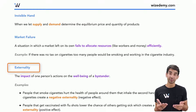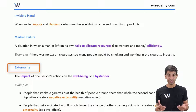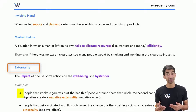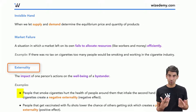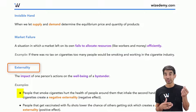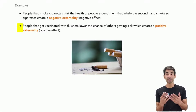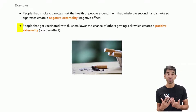That brings us to externalities. There are negative externalities and positive externalities. An externality is when there's an impact on the well-being of a bystander. A negative externality is a negative effect on somebody else — like cigarettes, where one person smoking causes others to inhale secondhand smoke or causes environmental damage. A positive externality is when there's a positive effect on others — like flu shots. If you get vaccinated, I have a lower chance of catching the flu, which is a positive externality for me and others in society.